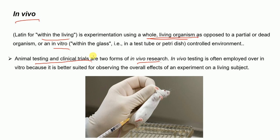Clinical trials are carried out in humans, so they are in vivo experiments. Animal testing or pre-clinical trials are performed in animals, and they are also in vivo experiments. In vivo testing is preferred over in vitro because we get a better idea of the overall effects of a drug molecule. As shown here, mice being injected with drugs is an example of in vivo experiments.